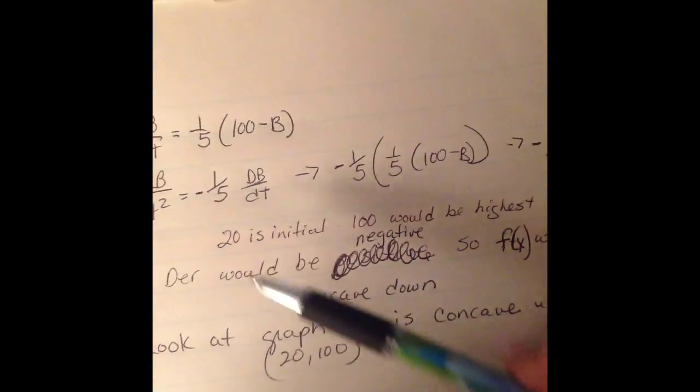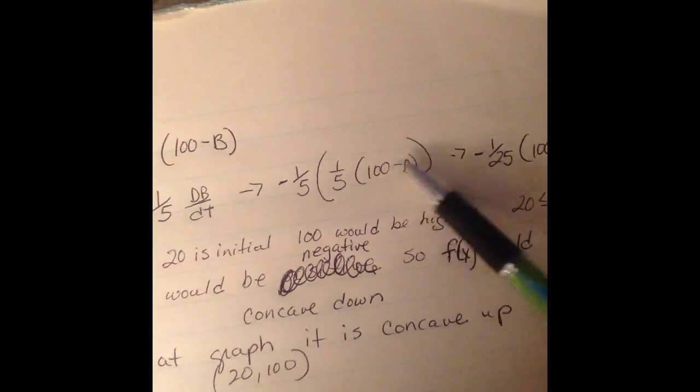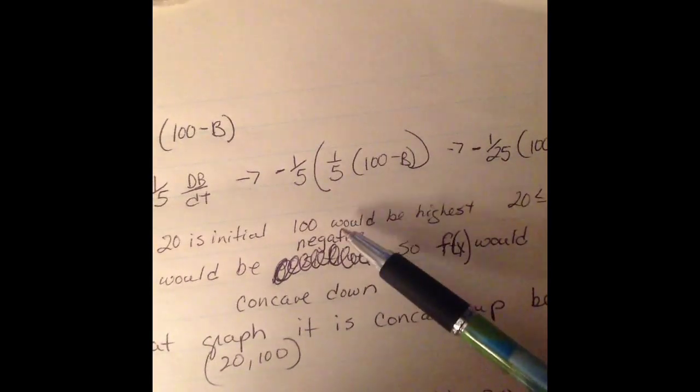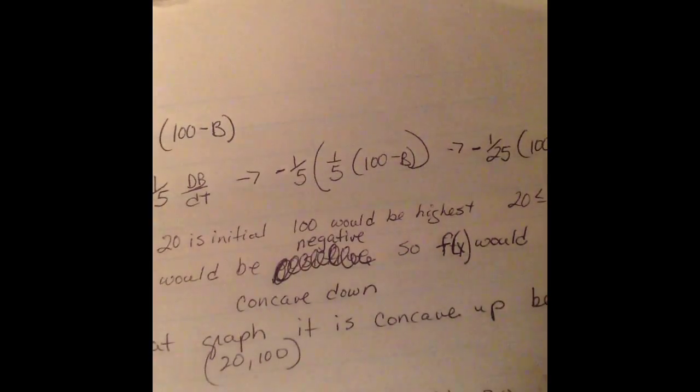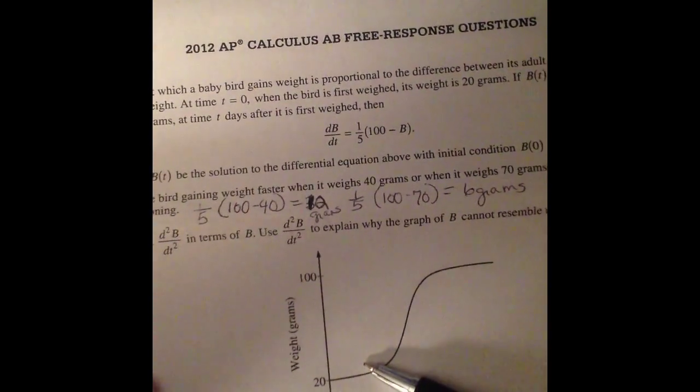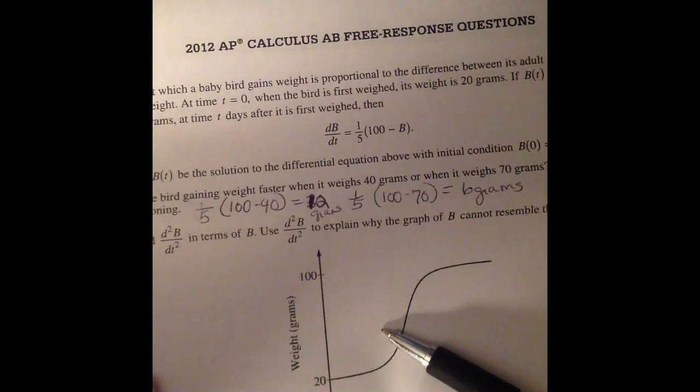And I get this. Now think about it. 20 was your initial. 100 would be the highest you could go because 100 - 100 would be 0. So you're looking from 20 to 100. Well, if you put any of those values in, this derivative is going to be negative. So that means your original f(x) was concave down. Now look at your graph. From 20 to 100, this is concave up. So this cannot resemble the correct graph.